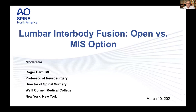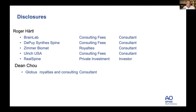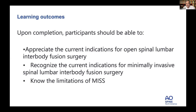I'll share a few housekeeping slides, then proceed with the actual webinar. We have Alex Vaccaro here, an orthopedic surgeon in Philadelphia, president of Rothman Spine at Thomas Jefferson University Hospital. And we have Dean Chow from UCSF, a neurosurgeon specializing in spinal deformity surgery and MIS surgery. Thanks to both Alex and Dean for being here tonight. We'll go through disclosures before starting.